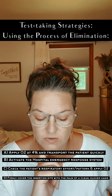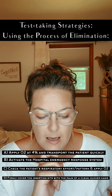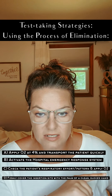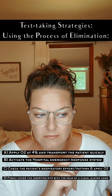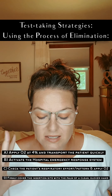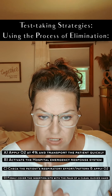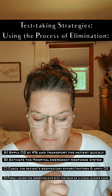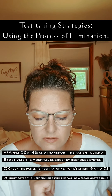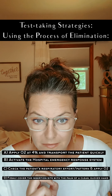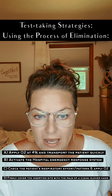It comes down to this. A: apply oxygen at 4% and transport quickly — you're leaving the chest wound open. Air is entering the pleural space. It's going to push the lung and the lung is going to collapse. B: activate the hospital emergency response system — that means you're going to do nothing. You are going to take no action whatsoever. Incorrect.